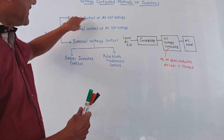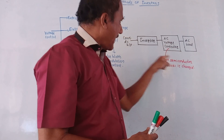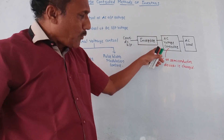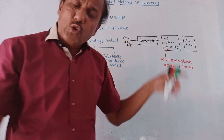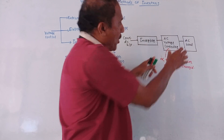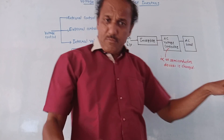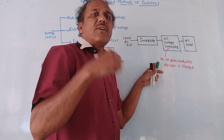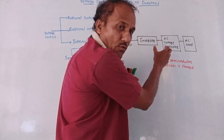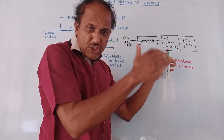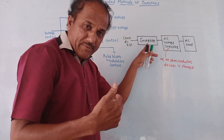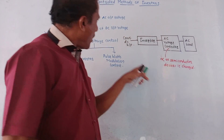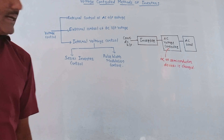Let us talk about the first type: external control of AC output voltage. This is the corresponding block diagram. In the case of an inverter, at the input side we are applying constant DC input. The output of the inverter will be AC voltage, but we want to control this AC voltage. So we have placed one extra block — an AC voltage controller. This block consists of semiconductor devices and has a certain value of alpha, where alpha is the firing angle. If you vary the value of the firing angle, then the AC voltage — the output of the inverter — can be controlled, and this controlled voltage is applied to the AC load such as an induction motor.